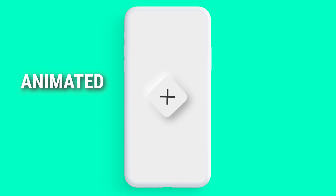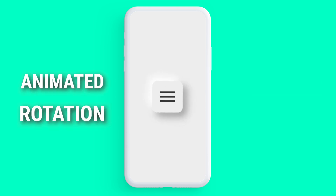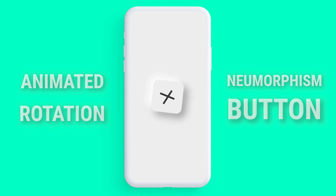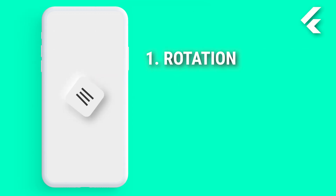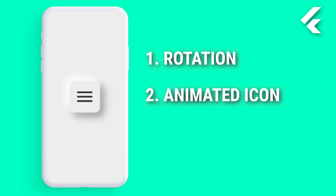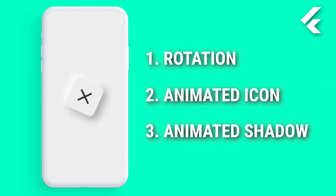You will learn how to create an animated rotation neumorphism button. This can be used in your app bar to display a menu. This button can do three things: first, the rotation; second, the animated icon; third, the animated shadow.